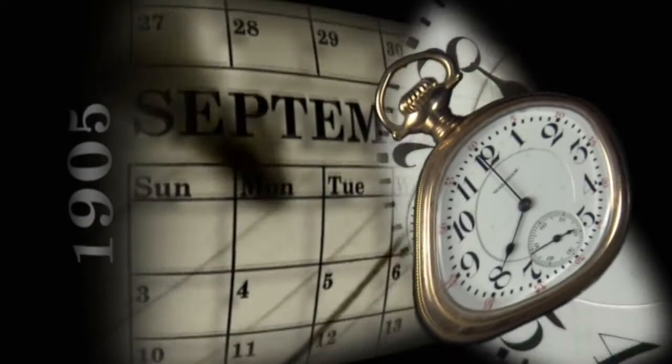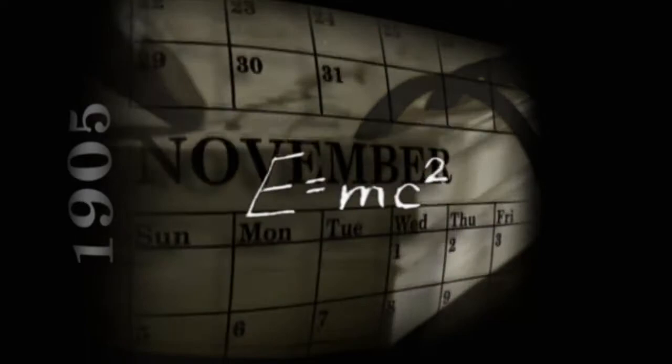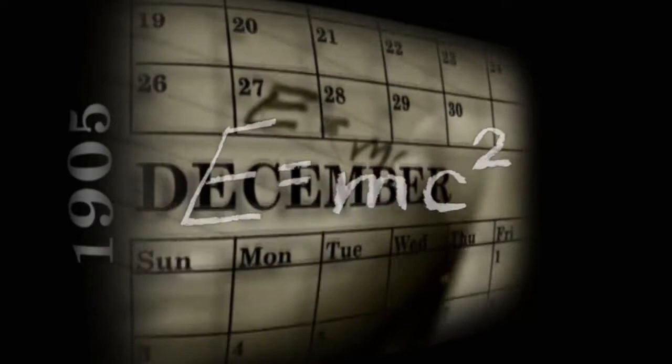Traveling at light speed, time slows down so that one second will linger for an eternity. He also realized that matter and energy are interchangeable. E equals mc squared. Einstein's theories set the stage for the technological revolution that defined the 20th century.